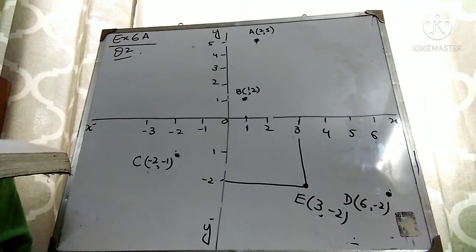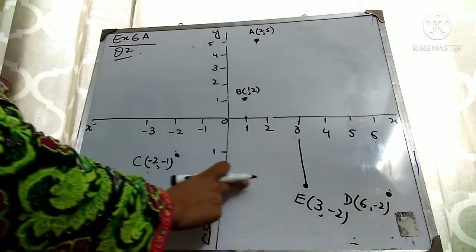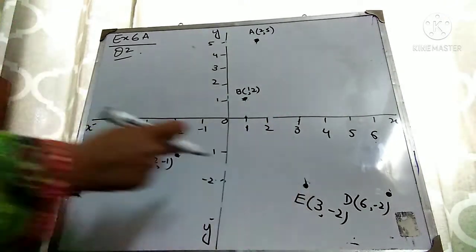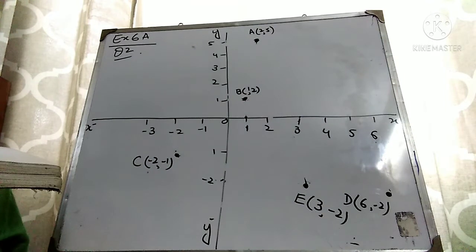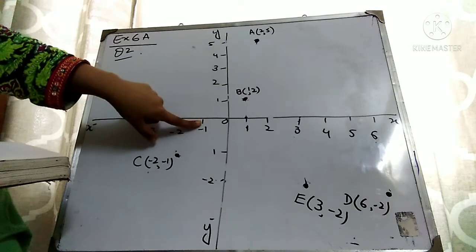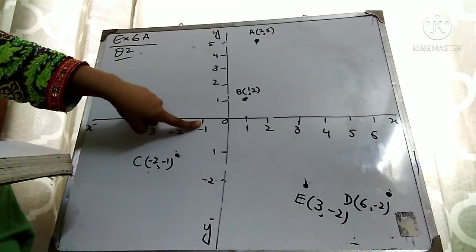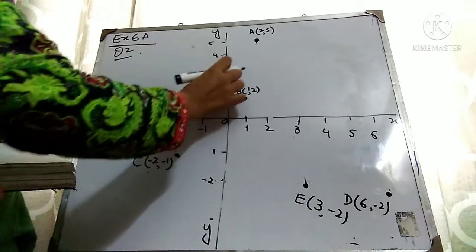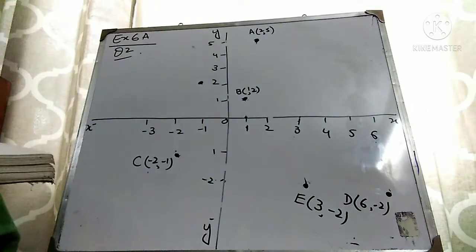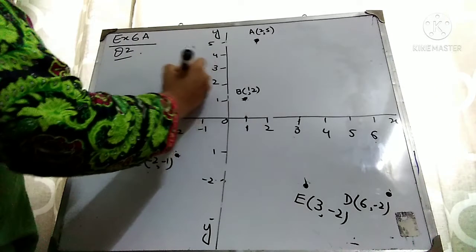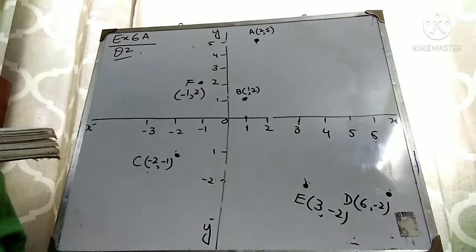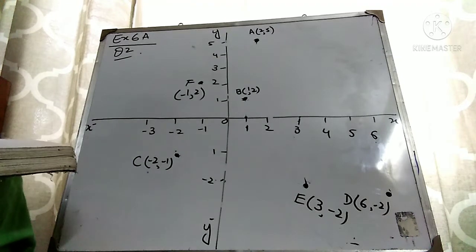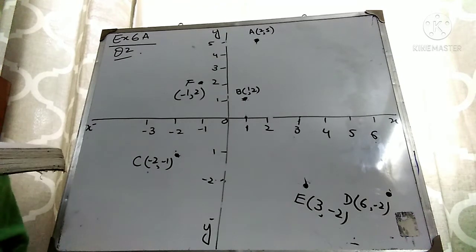The last point is F at (-1, 2). X value is minus 1 — come to minus 1. Y value is positive, so go upward. Minus 1 up to 2 — this is Y=2. So here is your point F at (-1, 2). This is how you draw the points, and I hope this concept is clear to you.